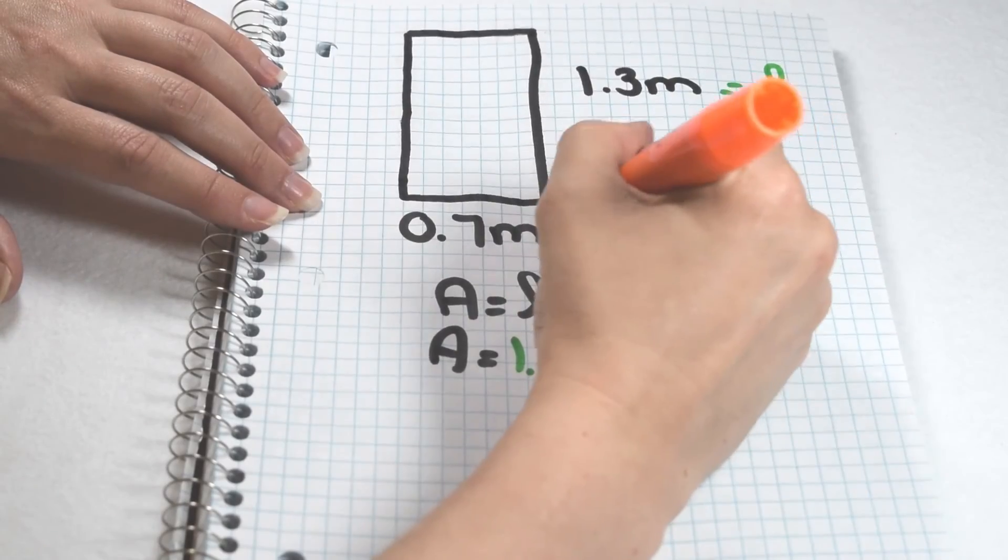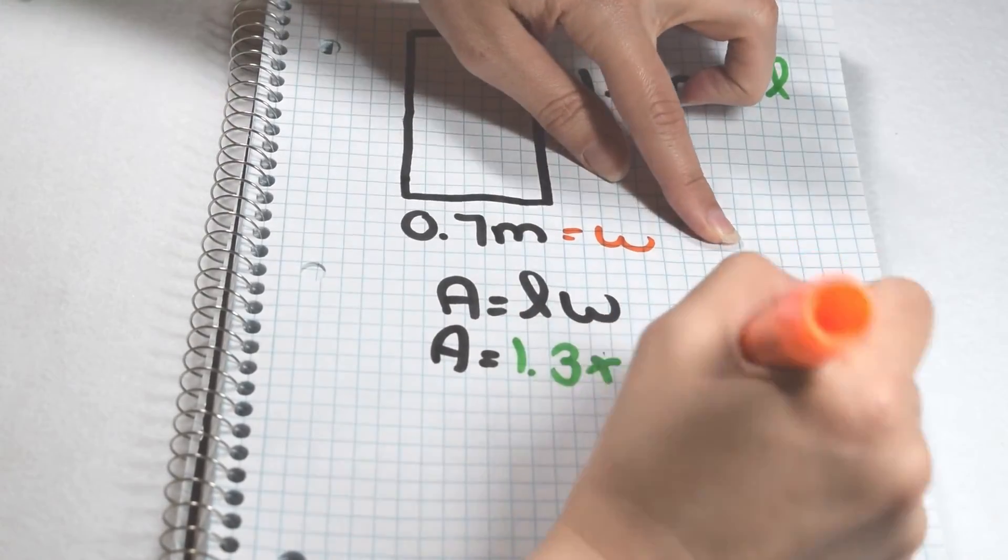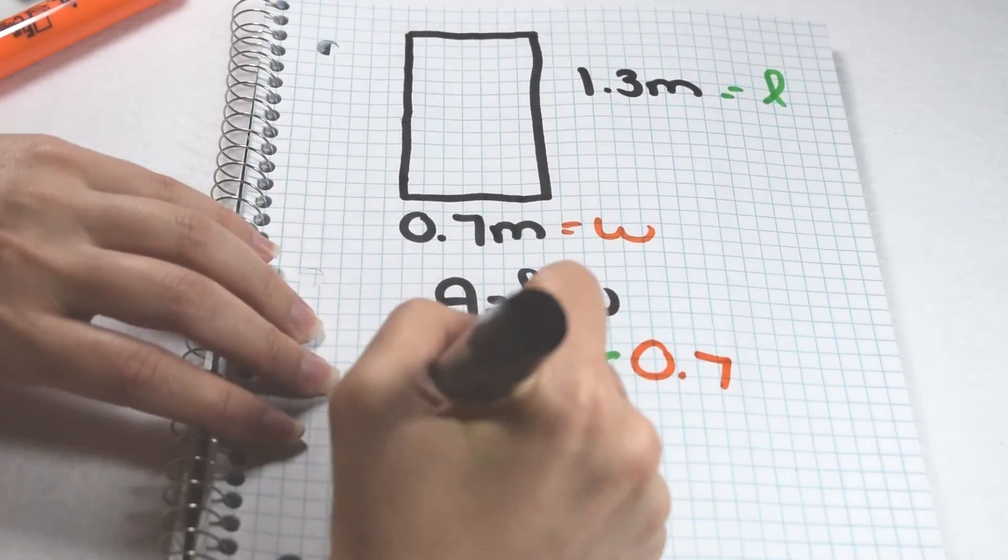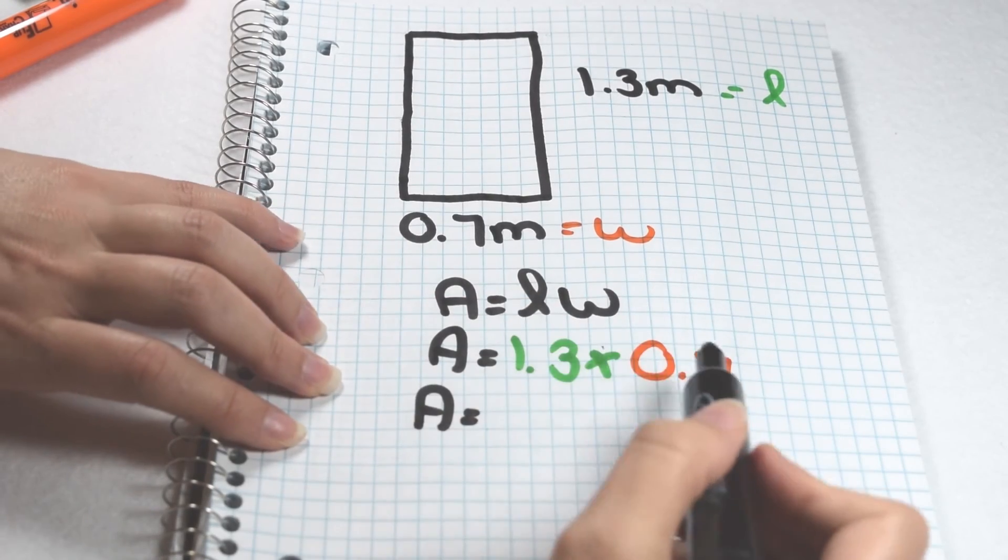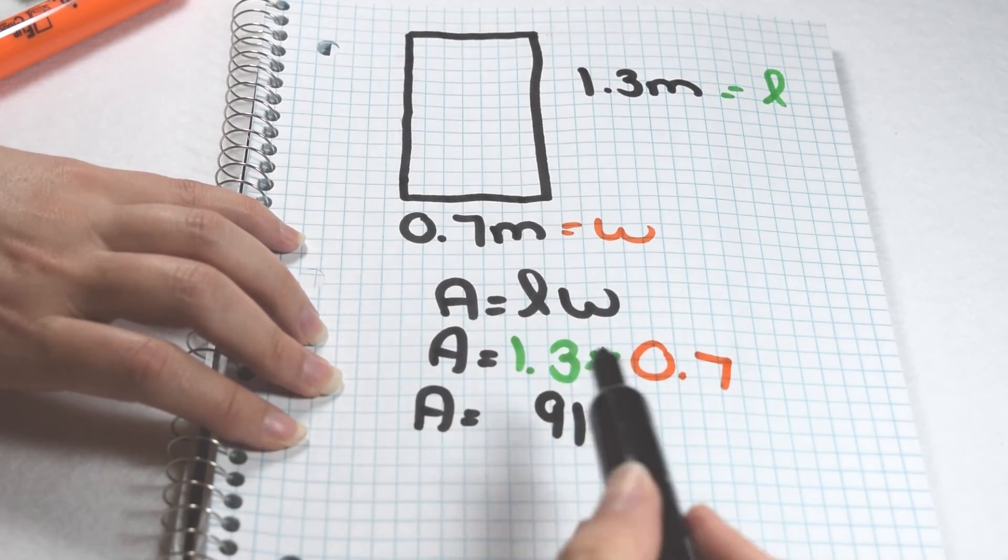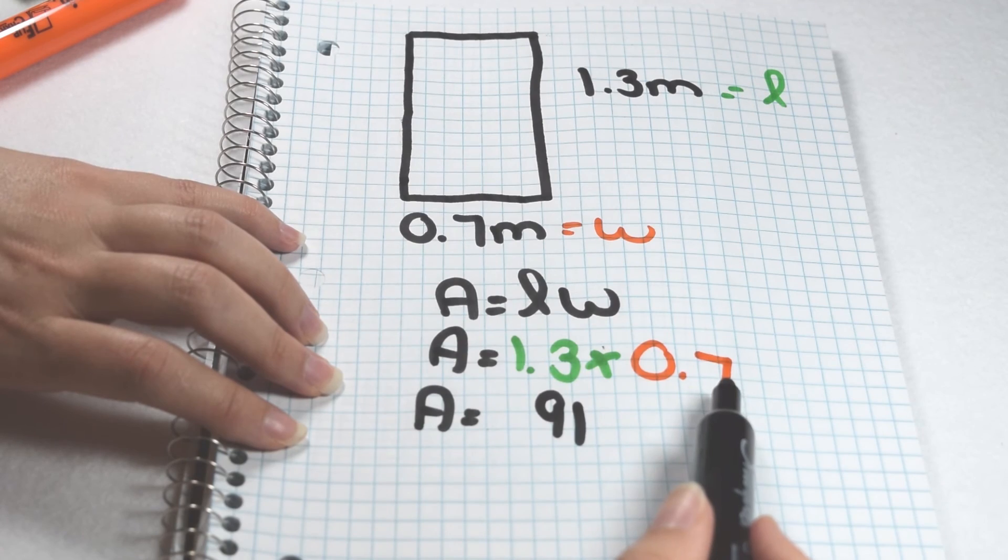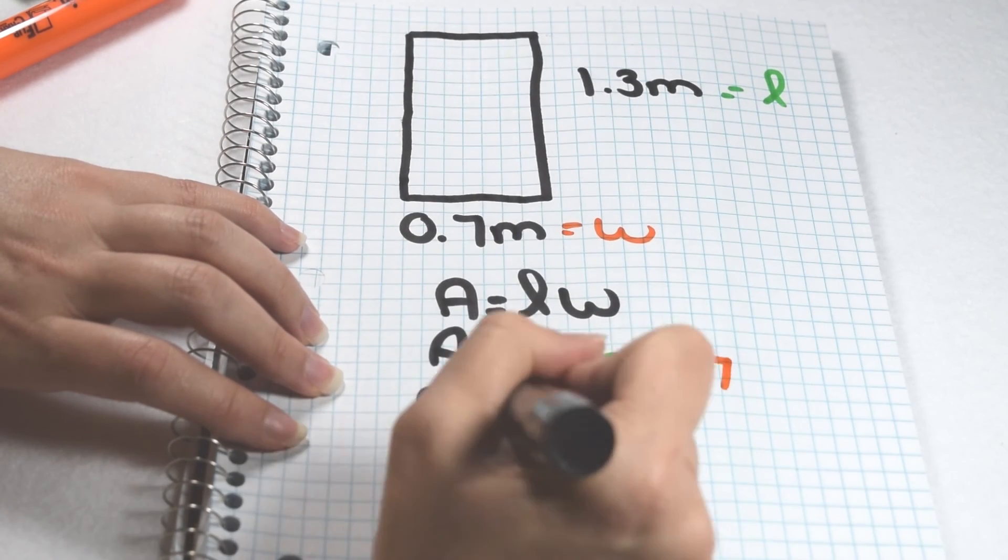we can follow our rules for multiplying decimals. I can treat this as 13 times 7 to give me 91, and then since 1 and 3 tenths and 7 tenths have a total of 2 decimal places, I need a total of 2 decimal places in my product as well to give me 91 hundredths.